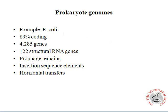Taking E. coli as an example, you will find that around 89% of sequences are coding sequences — that is, they code for amino acids. In total, there are 4,285 genes, including 122 structural RNA genes.